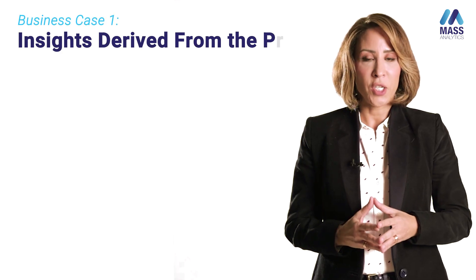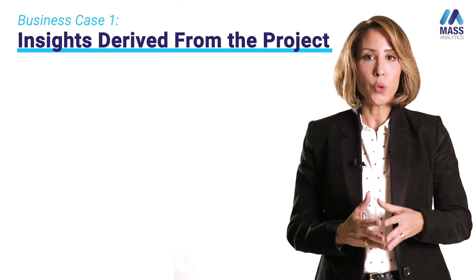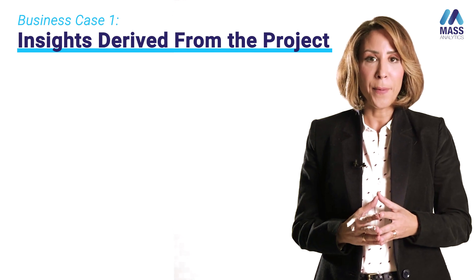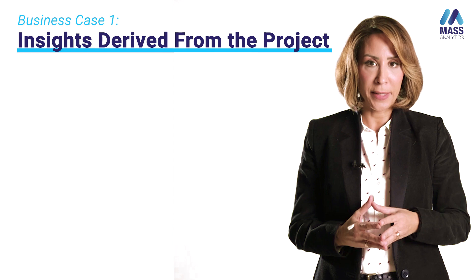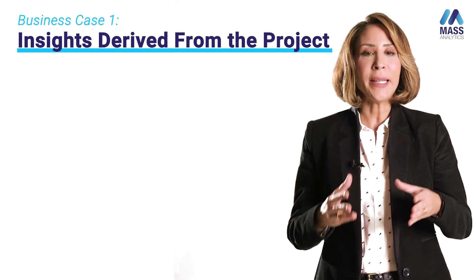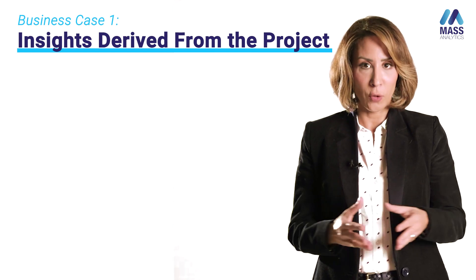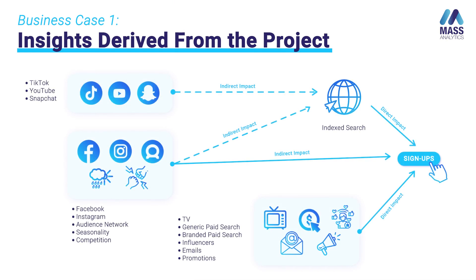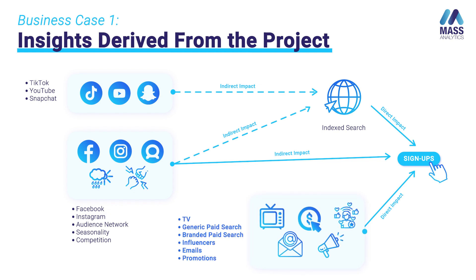Based on the architecture we just described, we were able to devise an interactive map and estimate its impact, measuring the direct and indirect impact of many channels. As you can see, depending on the channel, we measured different types of impacts. For example, focusing on TV, generic page search, branded page search, influencers, emails, and promotions — these factors only had a direct impact on sign-ups.